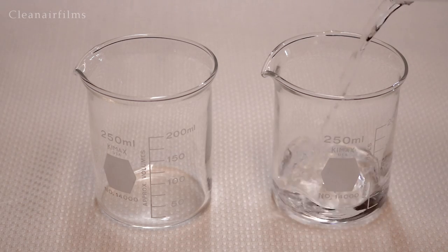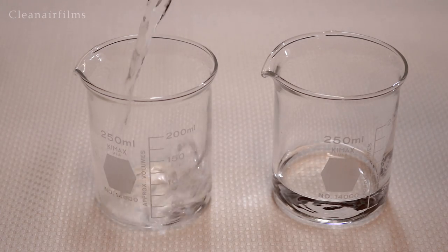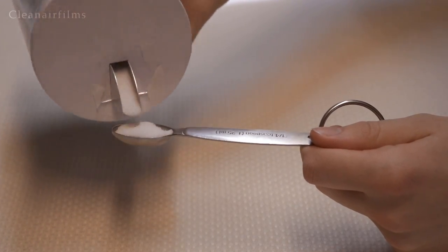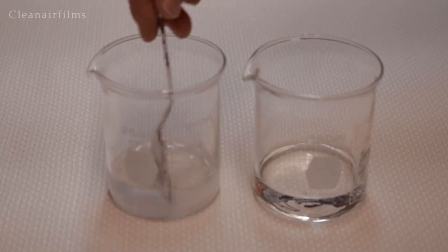Start by measuring out 50 milliliters of water into each beaker. Then add a quarter teaspoon of salt to one of the beakers. Stir the solution.